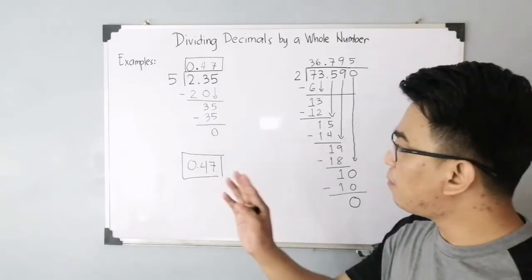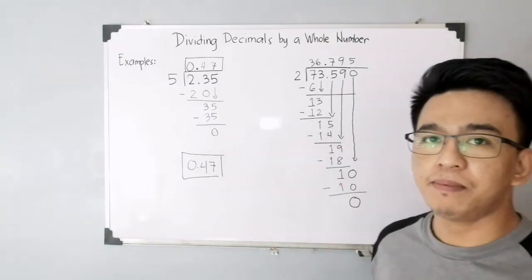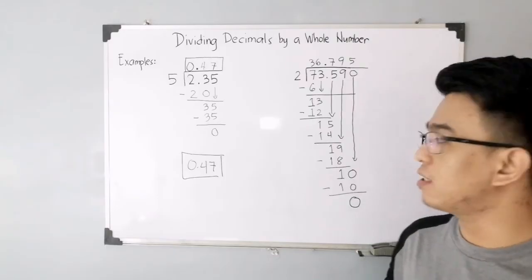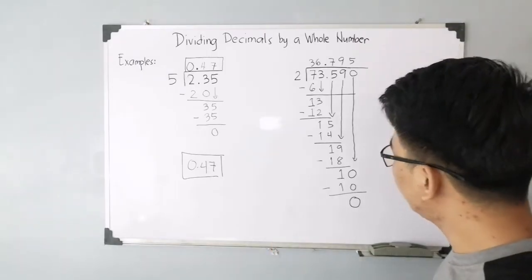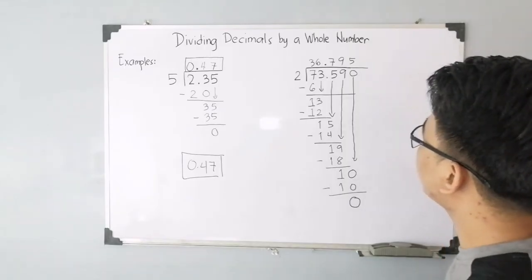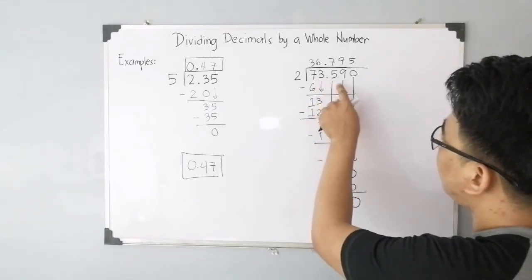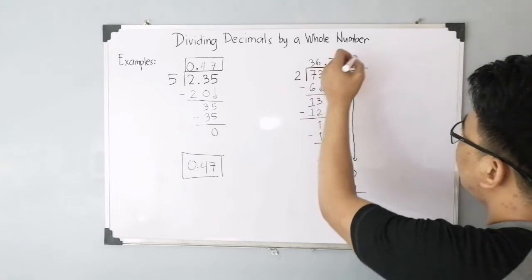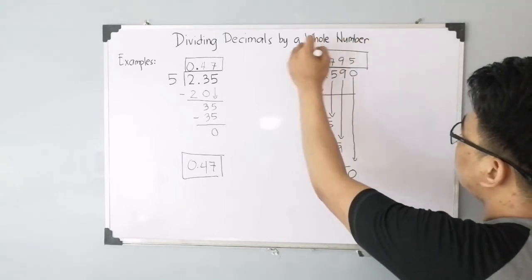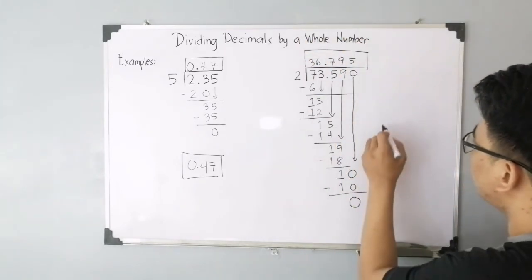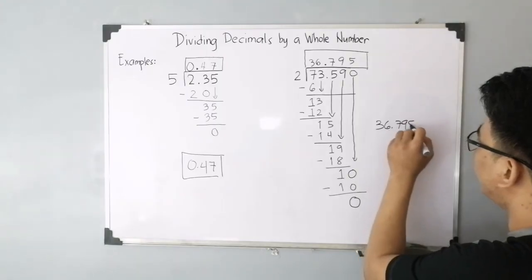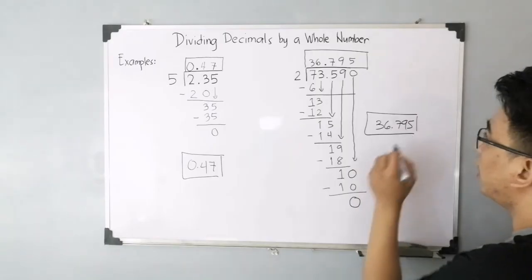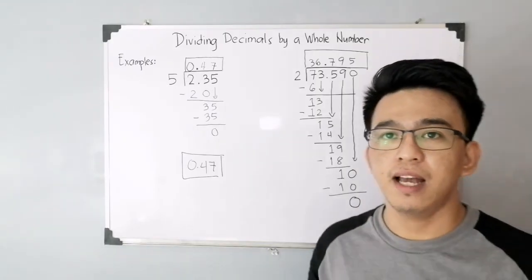As you can see, for example number 1 and number 2, we stop once we reach the difference of 0. So the correct answer, or the quotient in dividing 73.59 by 2, that is equivalent to 36.795. So that's our process on how to divide a decimal by a whole number.